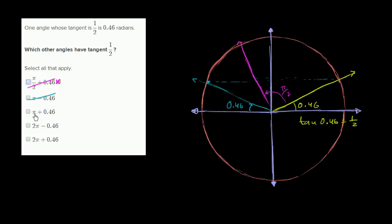0.46 plus π, or π plus 0.46. If you add π to this, you're essentially going halfway around the unit circle and forming a ray that is collinear with the original ray. So π plus 0.46 is this entire angle right over there.